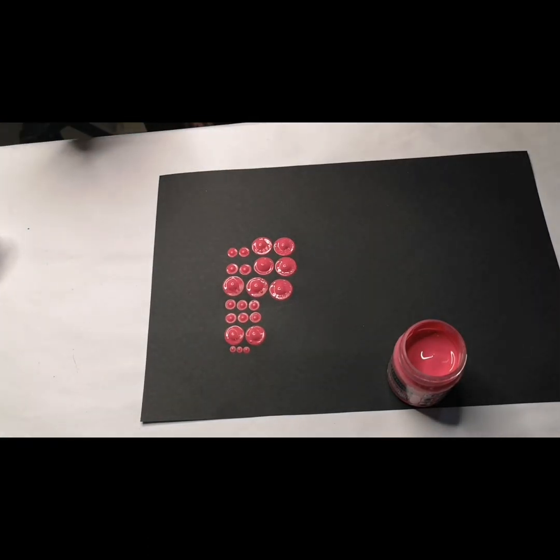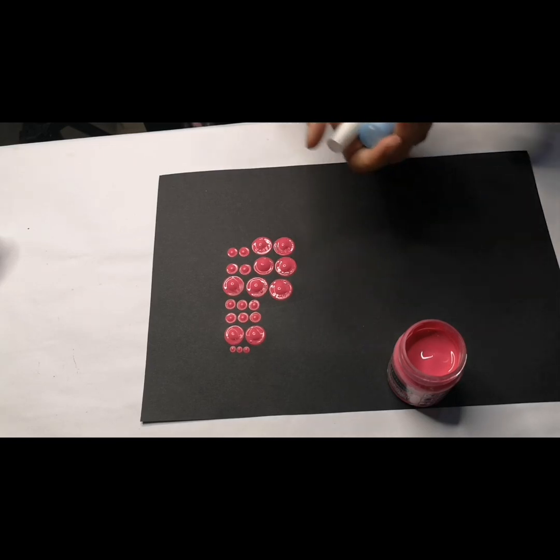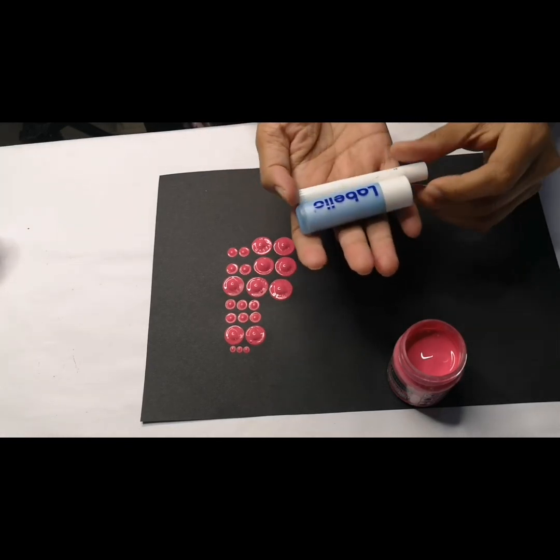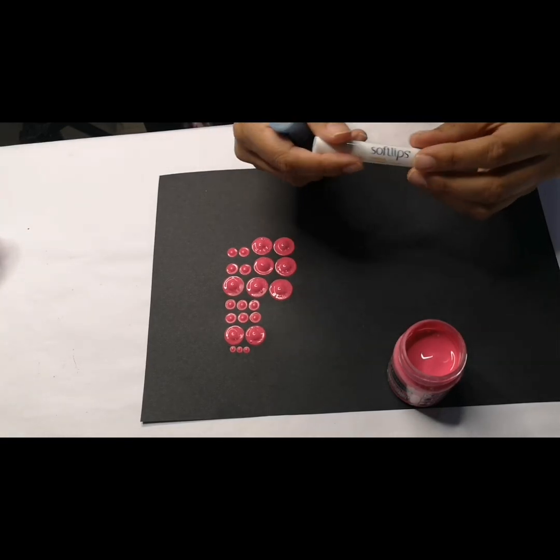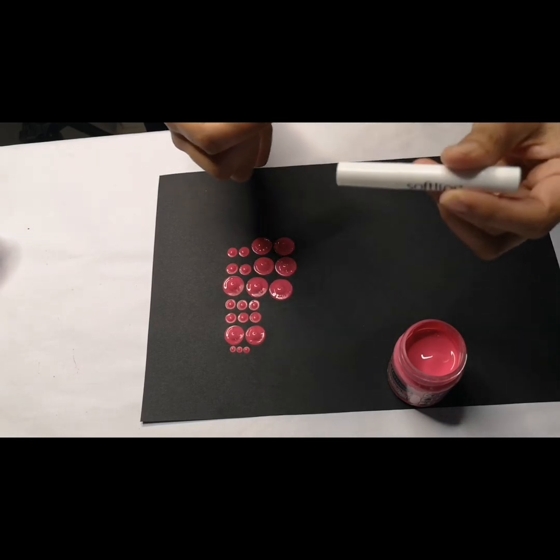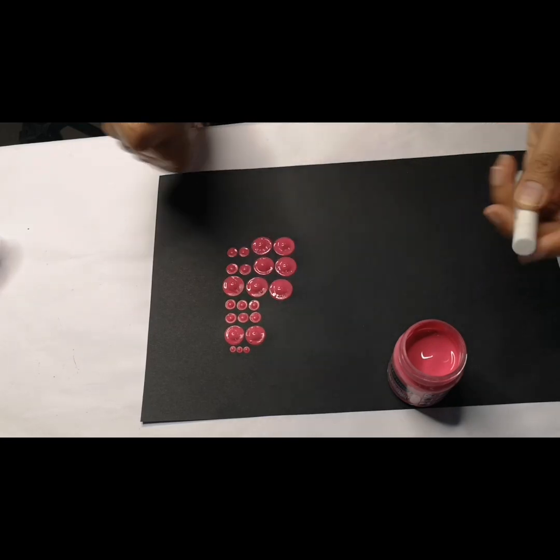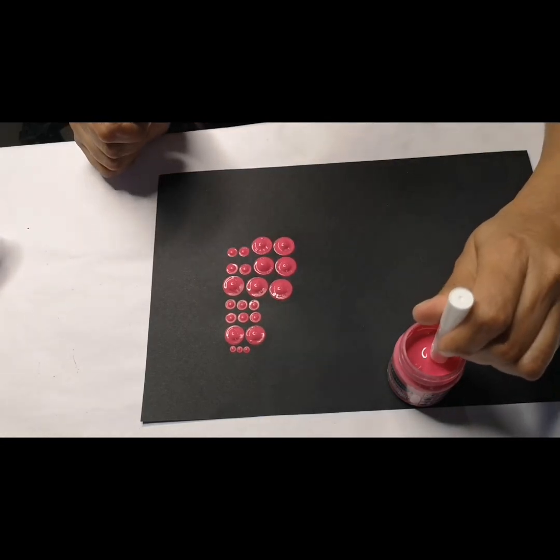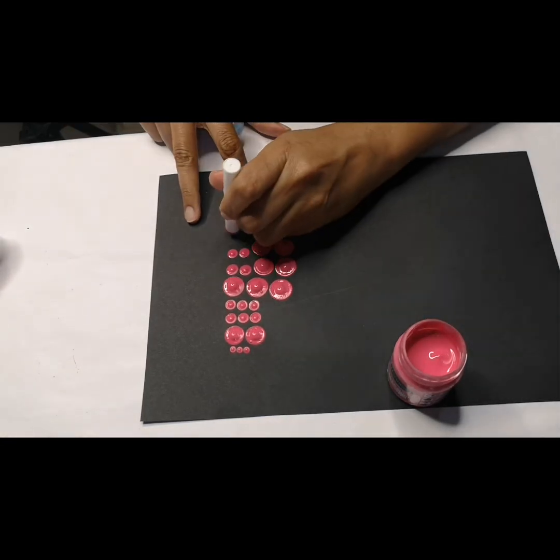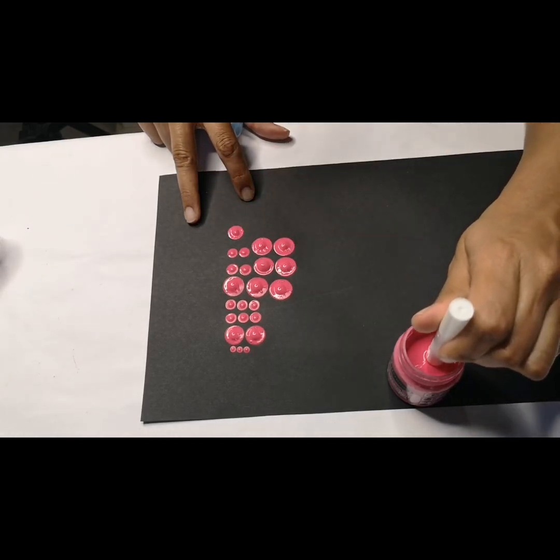Something else that can be used is lip balm or Labello. I have Soft Lips, which can make a smaller dot—I use the lid end. And this I came across while I was in New Zealand.